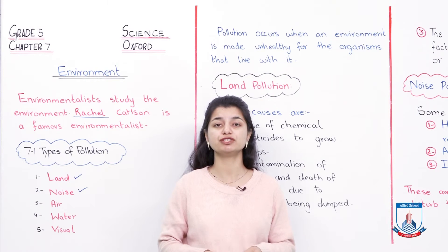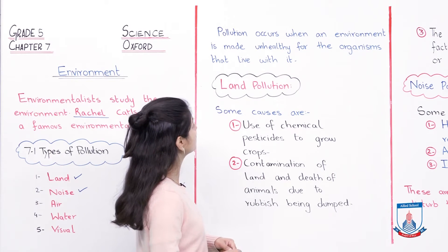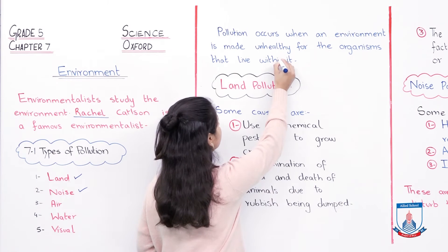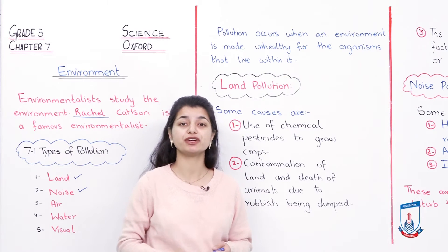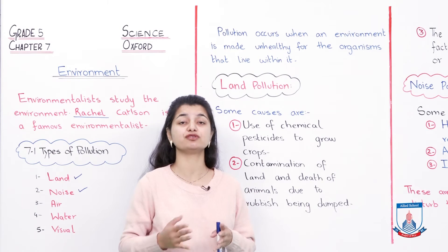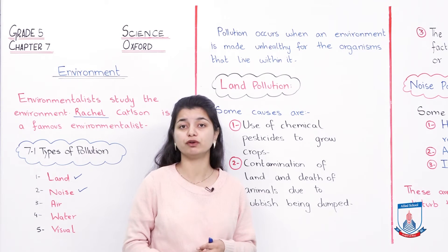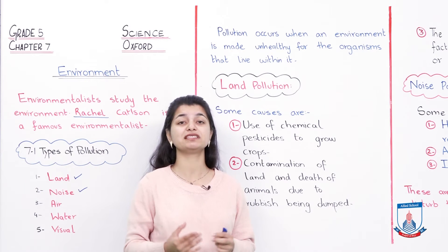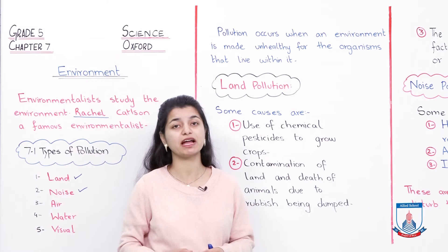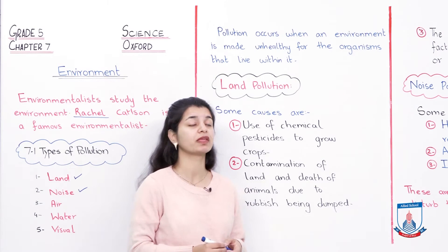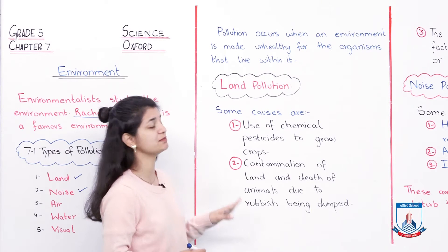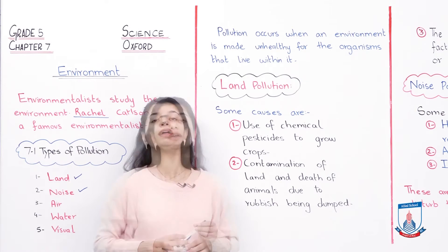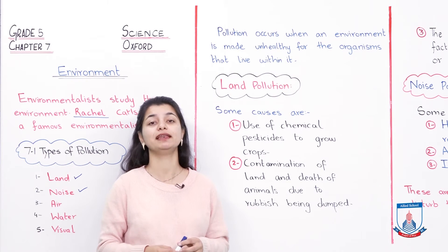Let's start with land pollution. Pollution occurs when an environment is made unhealthy for the organisms that live within it — whether humans, land, water, or animals. It varies from time to time and place to place. When an environment becomes unfit or unhealthy, we say it is polluted. When pollution is spread on the ground, we call it land pollution.